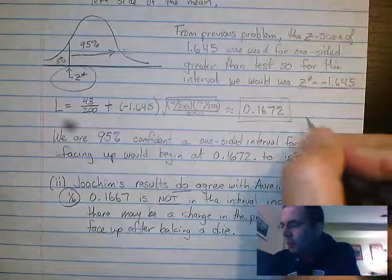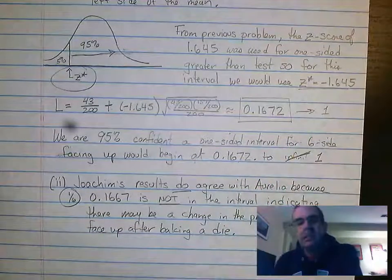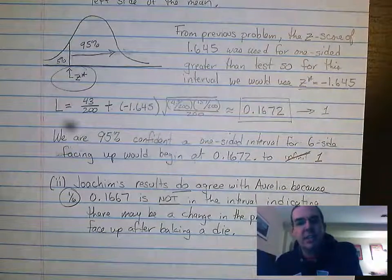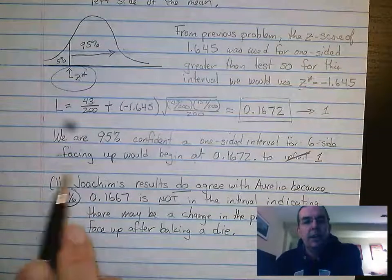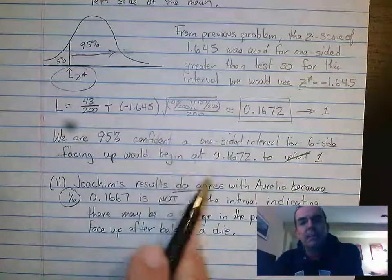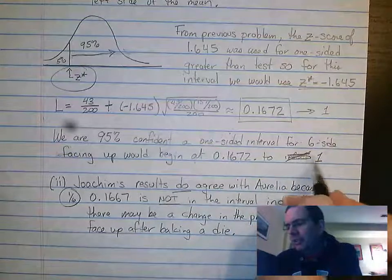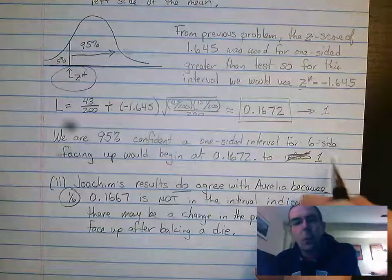So realistically, this is looking like 0.1672 all the way up to 1. Basically, that would be that every time you rolled, the die 6 came up. So we are 95% confident a one-sided interval for a six-side facing up would begin at 0.1672 and increase to, I had originally said infinity, but that doesn't make sense, to 1.